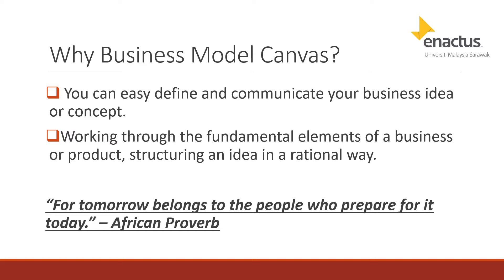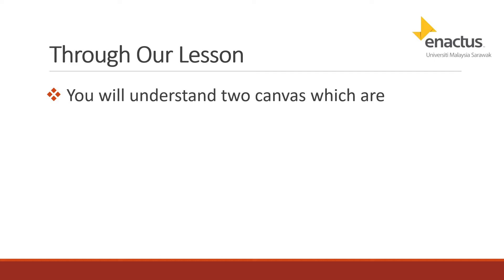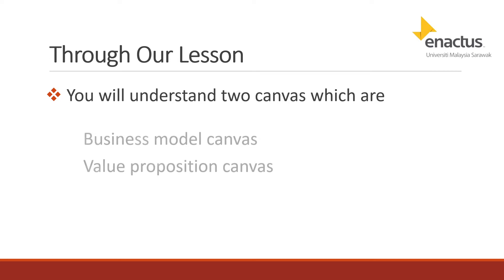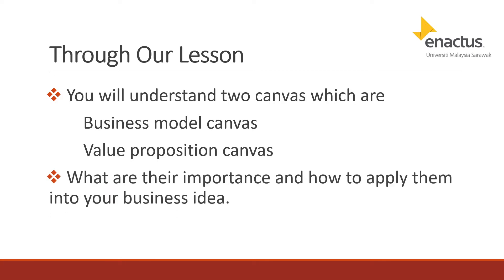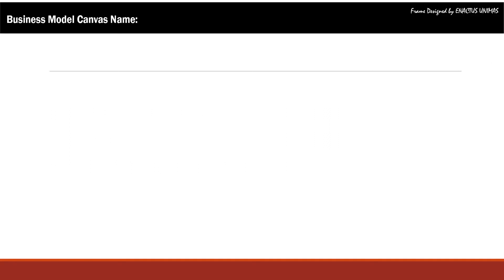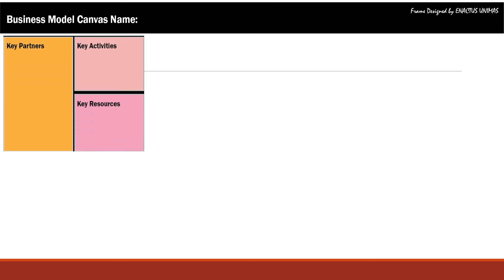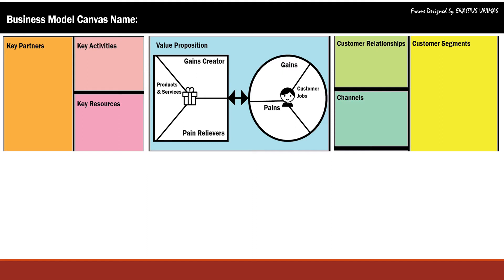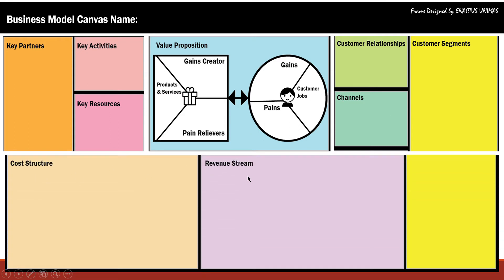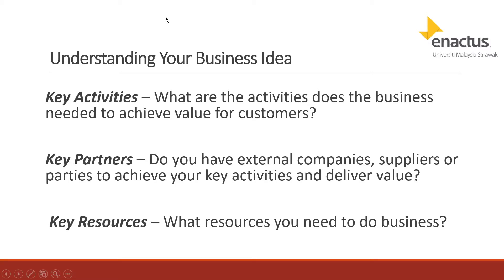Through our lesson today, you will understand two canvases: the Business Model Canvas and the Value Proposition Canvas, and how to apply them to your business idea. In the Business Model Canvas, you need to put your business name, and it includes key partners, key activities, key resources, value proposition, customer relationship, customer segment, channels, cost structure, and revenue stream.